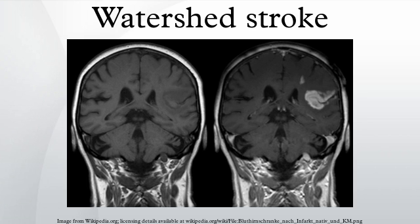Watershed strokes are caused by ischemia, or a lack of blood flow to the brain. There are several causes of ischemia, including embolism and atherosclerosis. Several conditions can predispose someone to watershed stroke by increasing the likelihood that insufficient blood supply will reach the brain. People with many different cardiovascular diseases have a higher likelihood of experiencing a clot or plaque that impedes flow through a blood vessel.